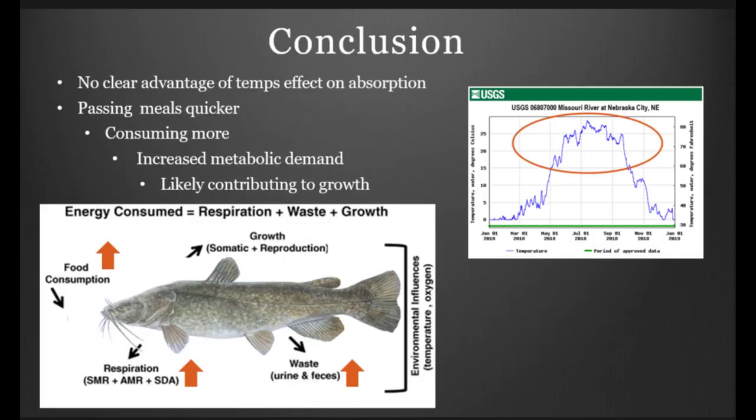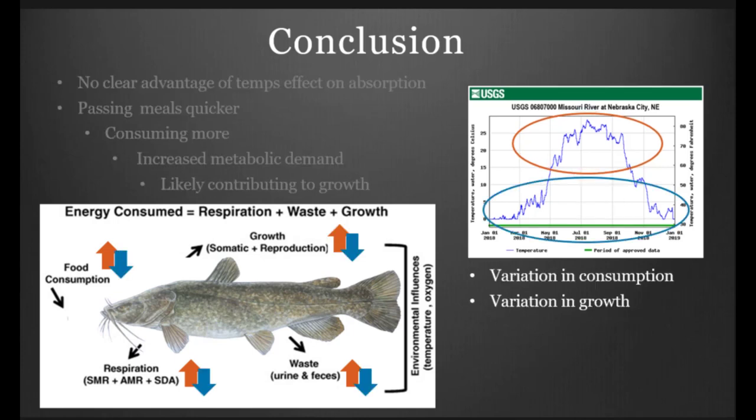In conclusion, we didn't really have a clear picture of what was going on with the temperature as far as the effects on absorption. We didn't see a clear advantage for a warmer water fish or a cooler water fish. We saw that at warmer temperatures, meals were passing quicker, consumption was increasing, and we thought that there was an increase in metabolic demand, which was spurring on the increase in consumption. Ultimately, we believe that because the fish was consuming more is able to keep up with his metabolic demand, and therefore is likely probably contributing to growth of those individuals. It's important for managers to consider these differences when taking field samples and just comparing gastric evacuation rates, understanding that temperature is influencing both variation in consumption and the growth of the individuals.